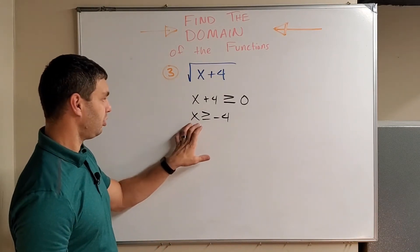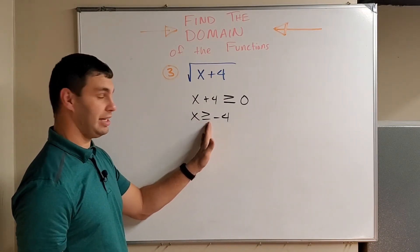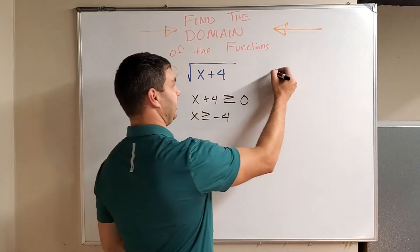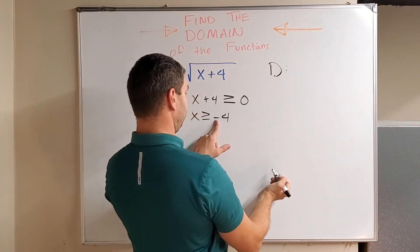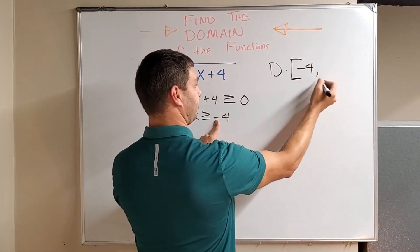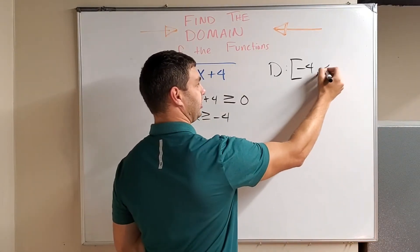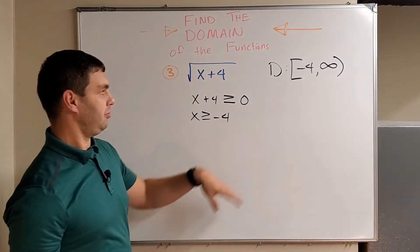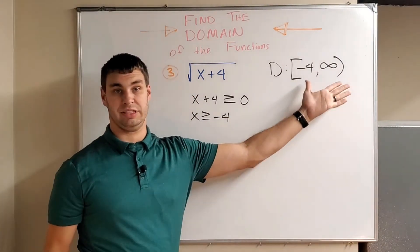So your domain that will work is all the x's that are greater than or equal to negative four. To write the domain: use a bracket — including negative four — all the way to infinity. It would be bracket, negative four, to infinity with a parenthesis. Infinities always get parentheses.